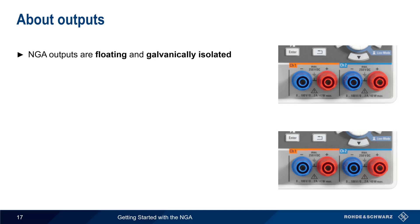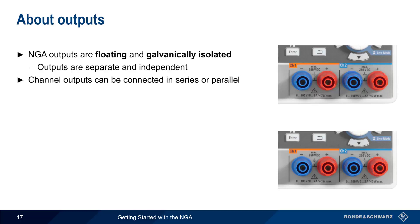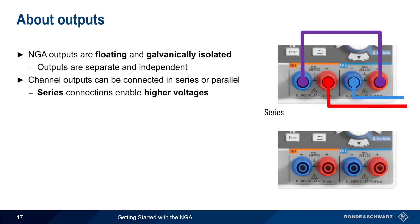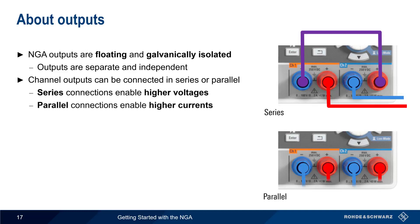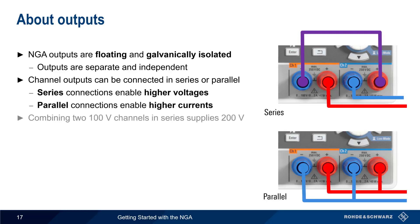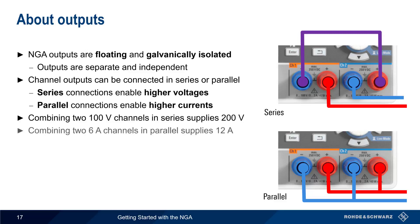The NGA outputs are both floating and galvanically isolated. This means that the two outputs of a dual-channel NGA can be viewed as separate and independent power supplies, which makes it possible to connect the channel outputs in series or in parallel. By connecting the outputs in series, the NGA can provide higher voltages than would be possible with a single channel. And by connecting them in parallel, higher currents are supported. For example, we can combine two 100-volt channels in series to get an output voltage of 200 volts, or combine two 6-amp channels in parallel for a combined output current of up to 12 amps.